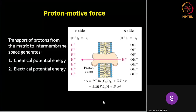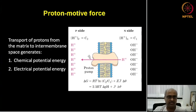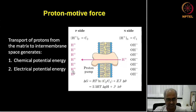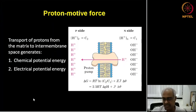We have seen the electron transport part, and in the process protons are pumped across the membrane into the intermembrane space. Today we are going to focus on how this proton gradient — high concentration in the intermembrane space and low in the matrix — drives ATP synthesis.